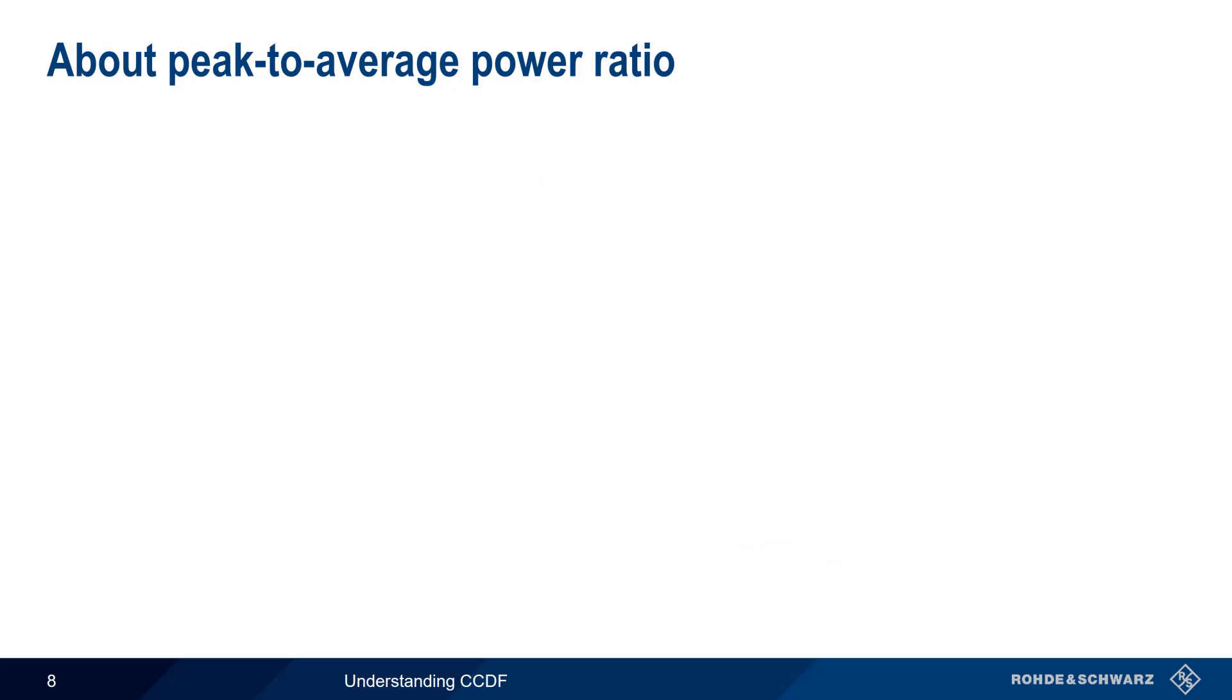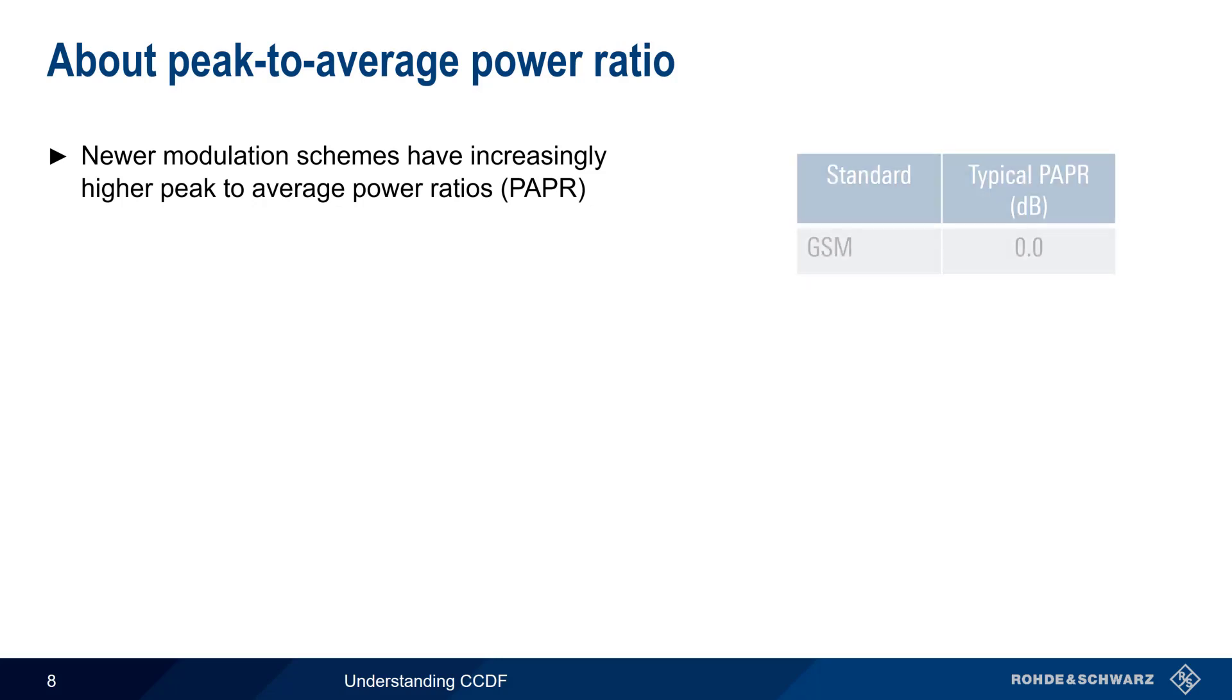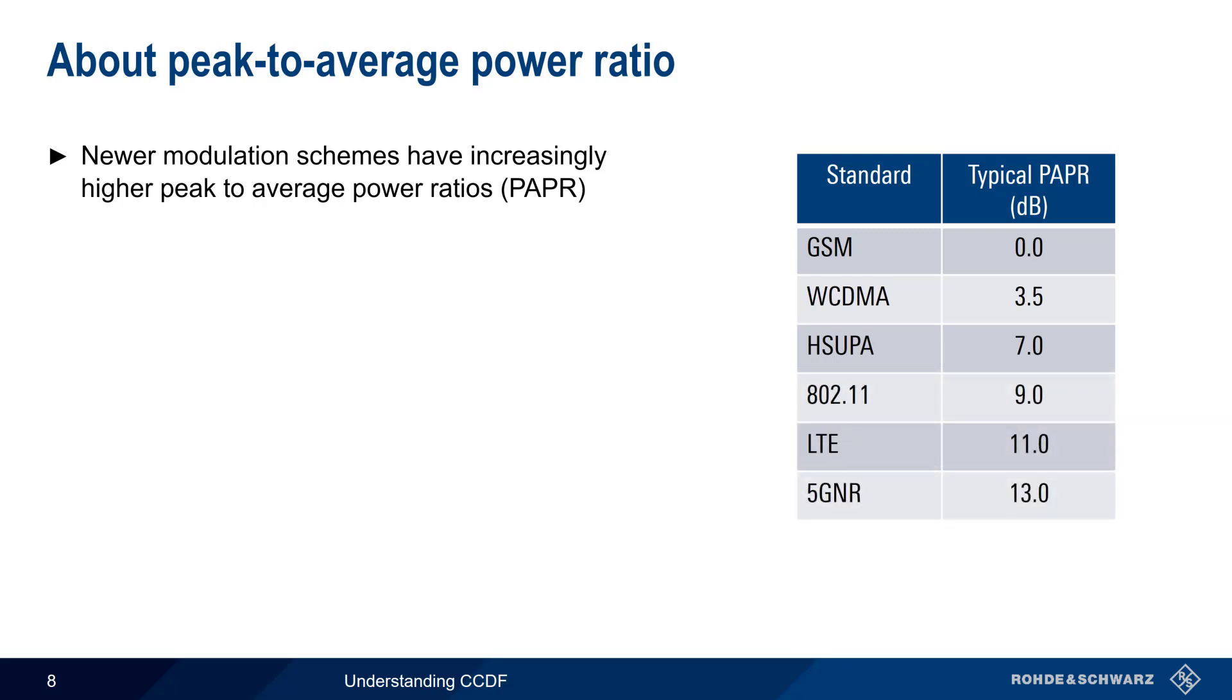Why is peak to average power ratio important? Over the last couple of decades, the peak to average power ratio of common modulation types has been steadily increasing. For example, GSM had a zero peak to average power ratio, but each new generation of cellular or wireless technology has had an increase in its peak to average ratio.